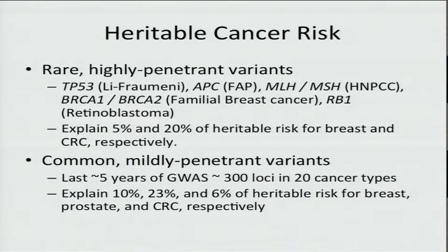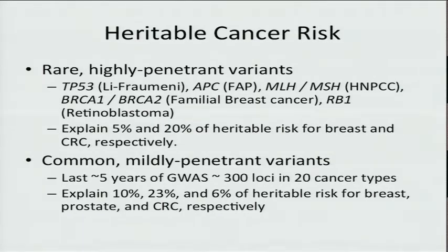Part of the genetic revolutions of the 80s and 90s was the use of positional cloning in family studies to discover rare, highly penetrant variants that mediate familial cancer syndromes. The highlights were the discovery of P53 in Li-Fraumeni syndrome, APC in familial colon cancer, MLH and MSH genes in Lynch syndrome, BRCA1 and BRCA2 in familial breast cancer, and RB1 in retinoblastoma. Together, all these high-penetrance variants explain a small percentage of the heritable risk for various tumor types.